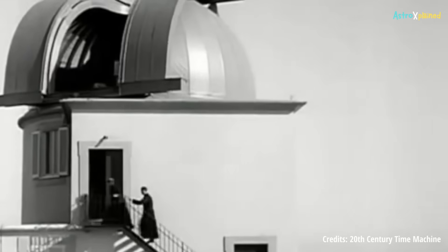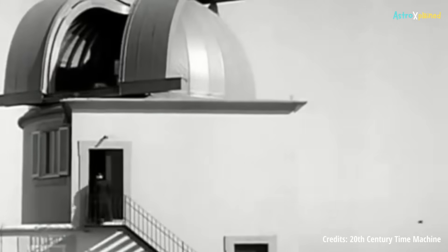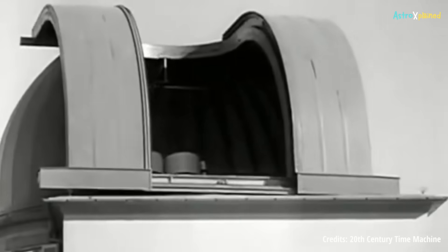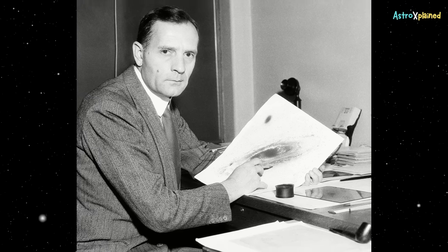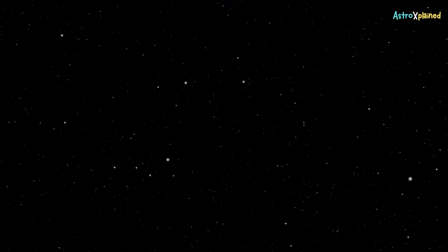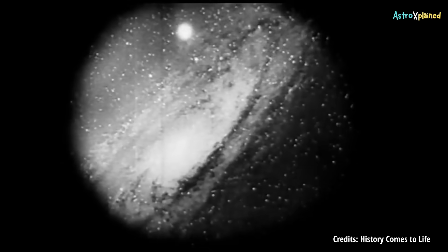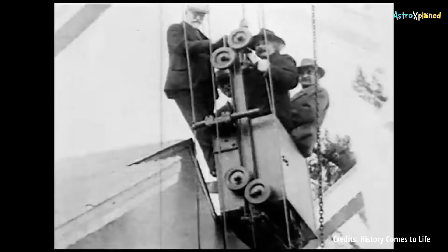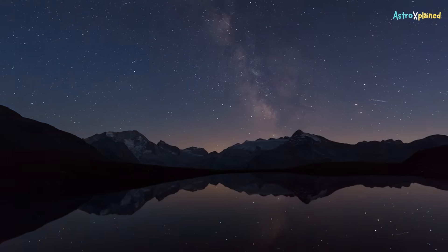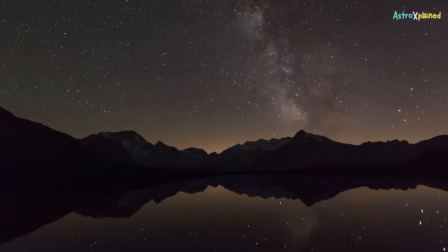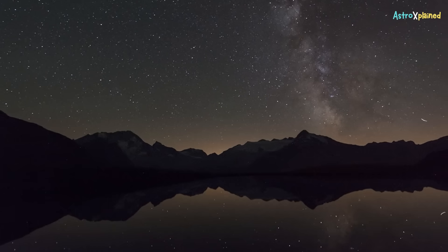But by the late 1920s, empirical evidence began to challenge the notion of a static universe. In 1929, Edwin Hubble published observations indicating that distant galaxies are receding from us, providing strong evidence for an expanding universe. In early 1931, after visiting Hubble and seeing the Mount Wilson Observatory's data firsthand, Einstein publicly abandoned the static universe model. He embraced the idea of an expanding universe and accepted that the cosmological constant was unnecessary for this model. Consequently, for several decades, the consensus shifted toward models of a matter-dominated, expanding universe without a significant contribution from lambda.